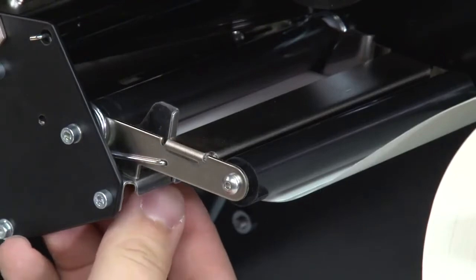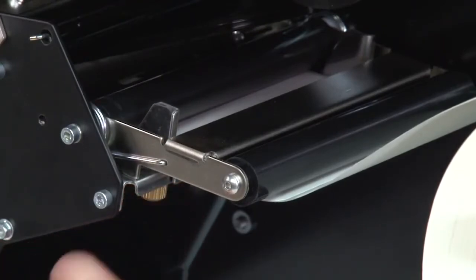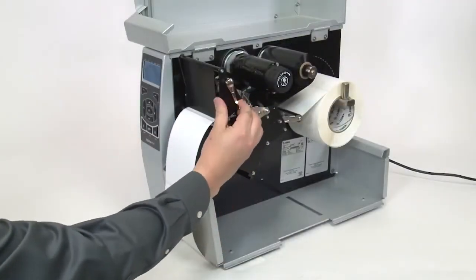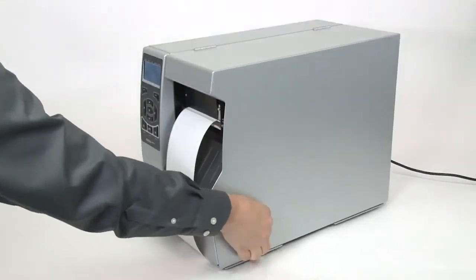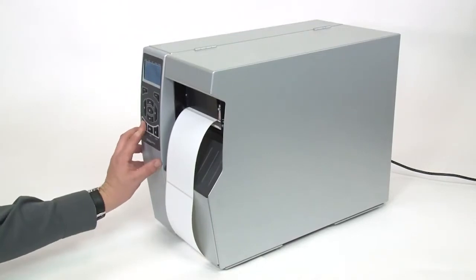Slide in the media supply guide until it touches the media. Tighten the thumb screw. Close the printhead. Close the media door. Press pause to enable printing.